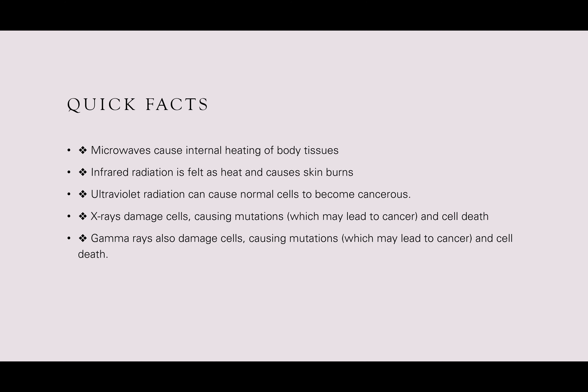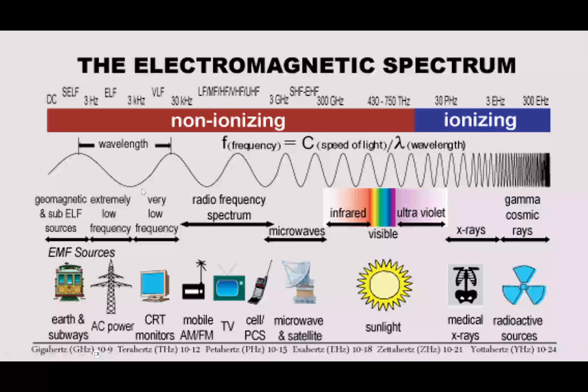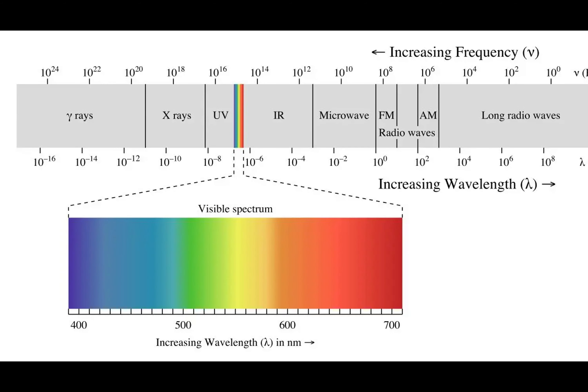We generally speak about the electromagnetic spectrum when we get into spectroscopy. The electromagnetic spectrum is a relationship between the different wavelengths and intensities or frequencies of light that are observed. What we're going to be looking at is the region of infrared to visible to UV — this is the region we're most concerned about.